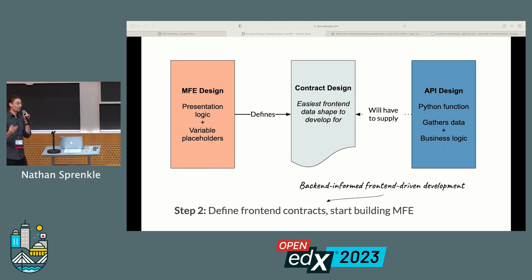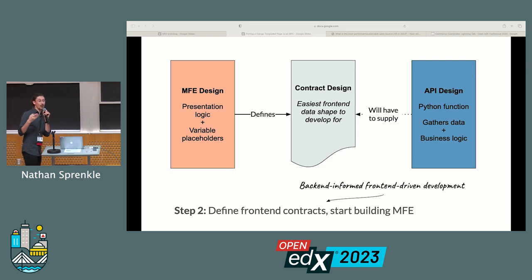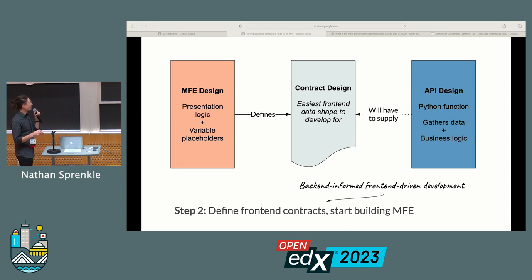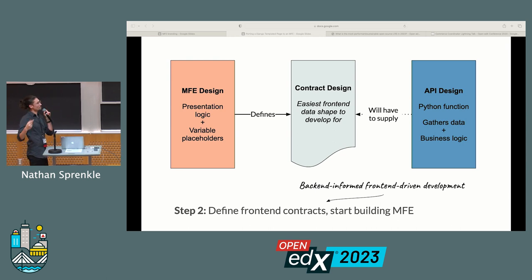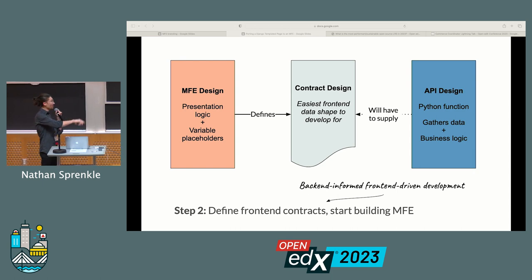The next step is what we call front-end-driven development. We want our front-end to be able to say, this is how I would like the data structured, because that makes it easy to develop against. We ended up with something in-between, which I'm calling back-end-informed front-end-driven development. The MFE still says how it wants the data structured, but that's informed by the rough data and shapes we now have from our new back-end.